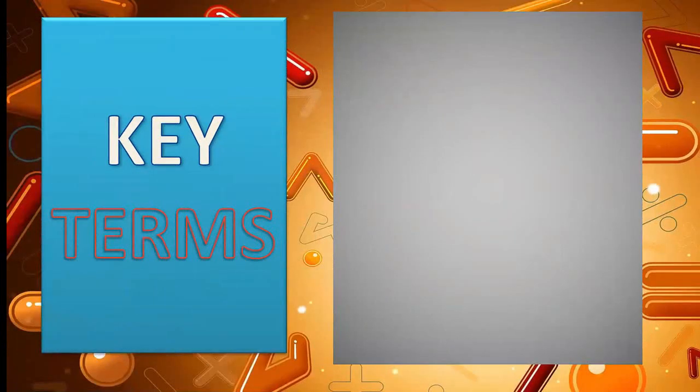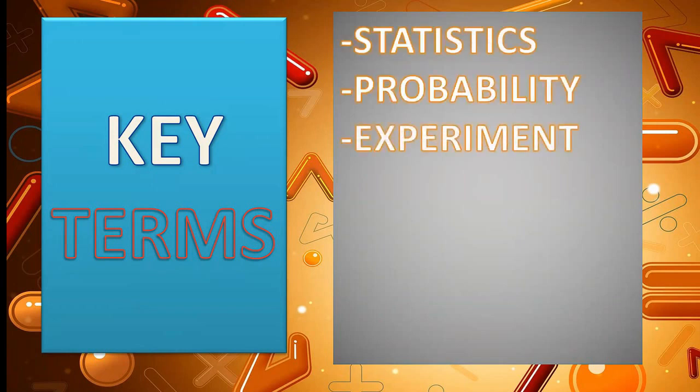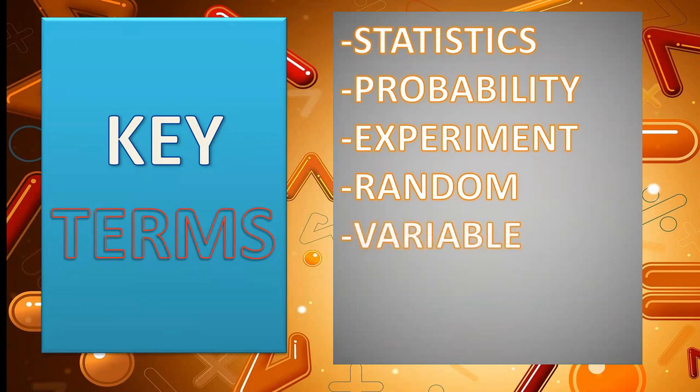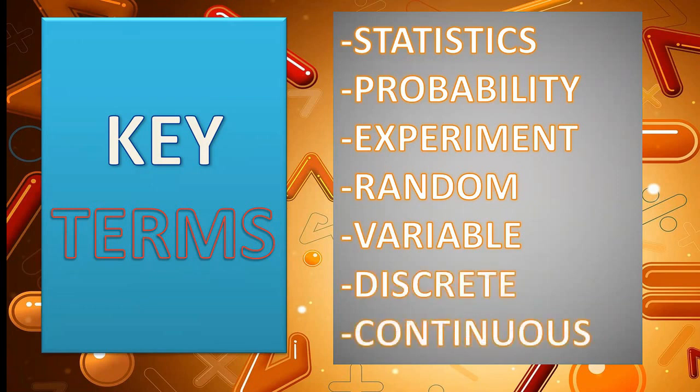For us to start this topic, there are key terms students must know to have a better understanding. We already had a definition about it earlier. Followed by Experiment, this refers to any procedure that can be infinitely repeated and has a well-defined set of possible outcomes. Then, Random, which is any proceeding made or occurring without definite aim, reason, or pattern. And Variable, that refers to any characteristic or quantity that can be measured or counted. And the last two are the words Discrete and Continuous. We will discuss these two further later on.